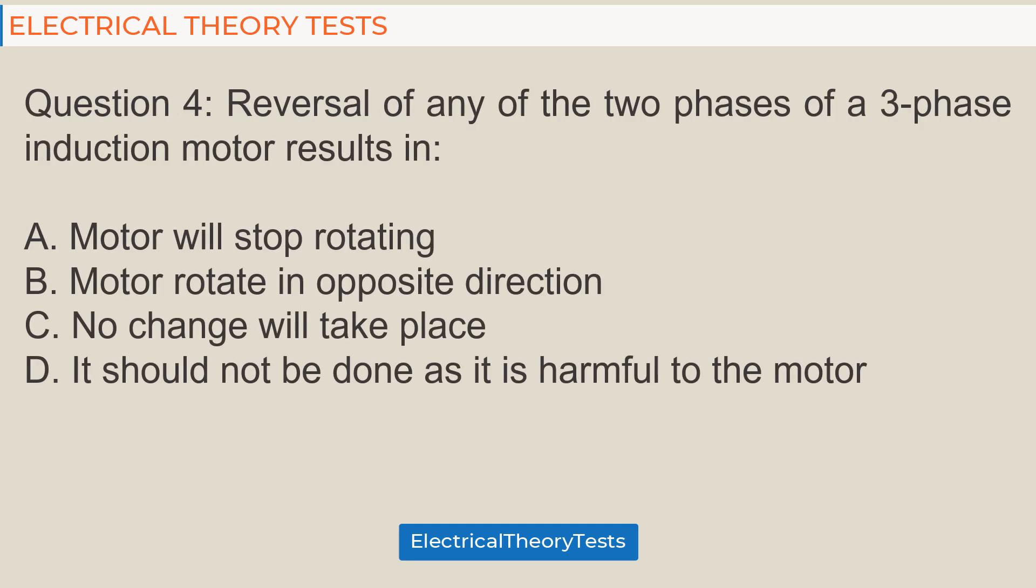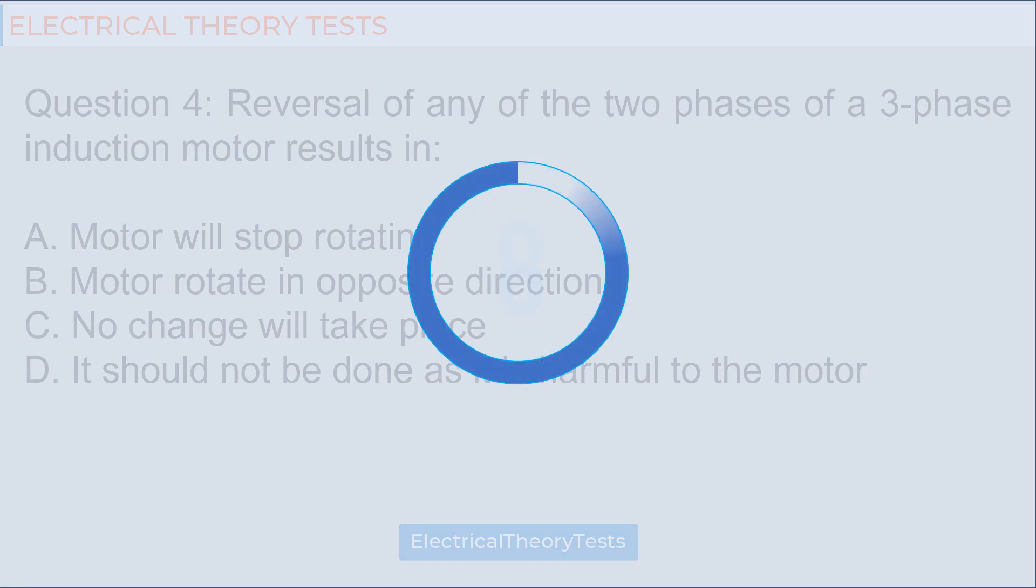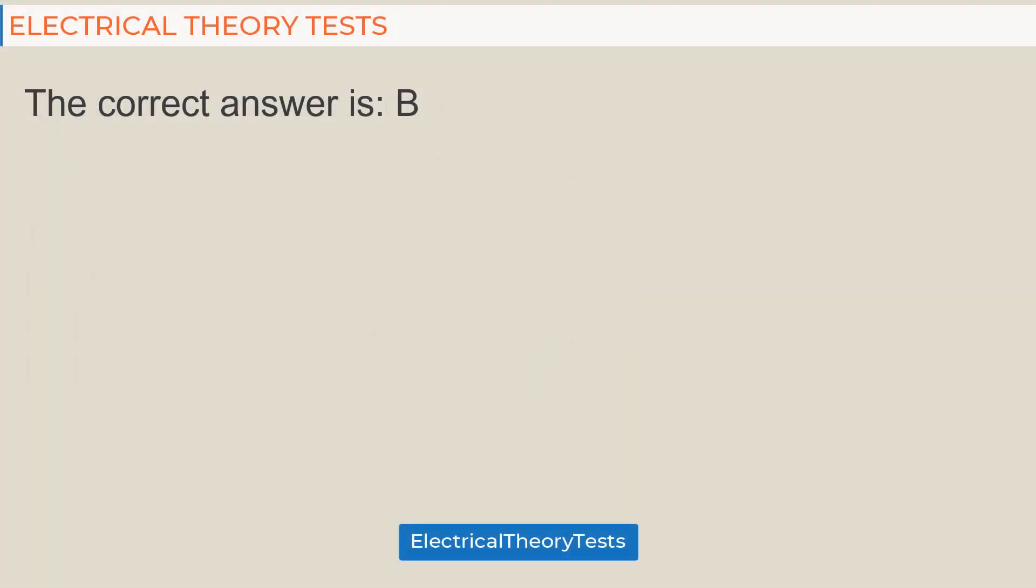Question 4: Reversal of any of the two phases of a three-phase induction motor results in: A. motor will stop rotating, B. motor rotate in opposite direction, C. no change will take place, D. it should not be done as it is harmful to the motor. The correct answer is B.